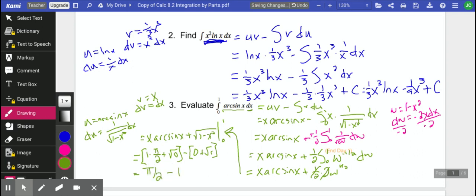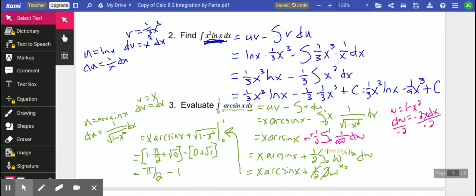So our answer is pi over 2 minus 1. Final answer there. We'll see a couple more examples of lots more fun stuff that we can do with integration by parts.